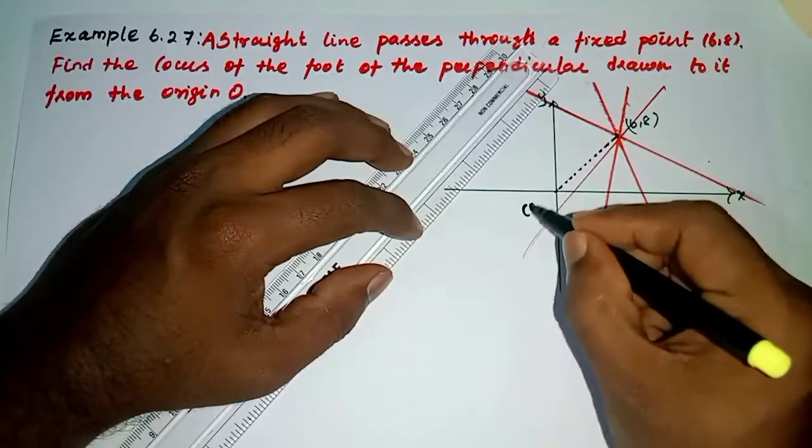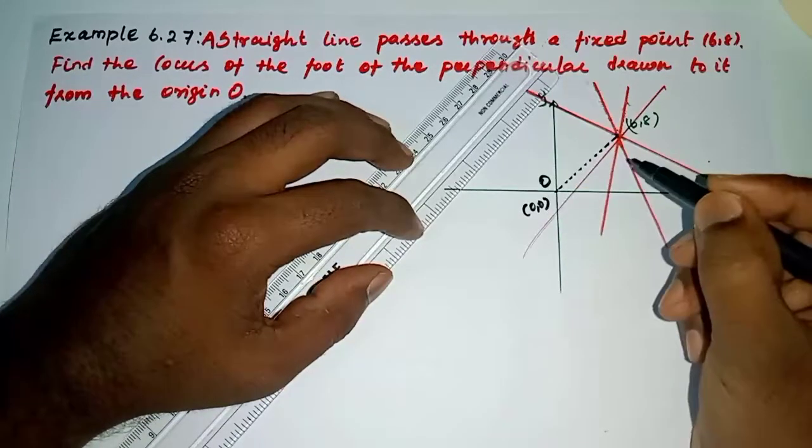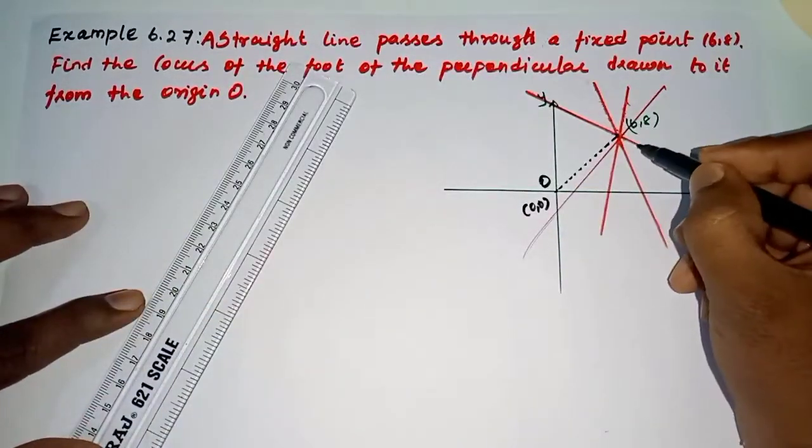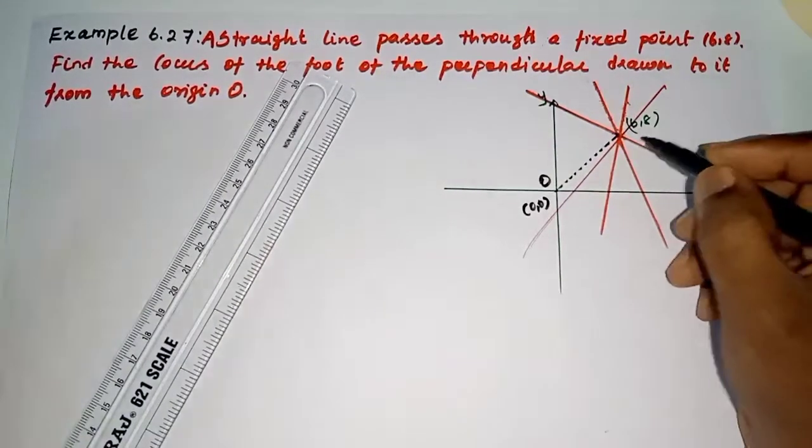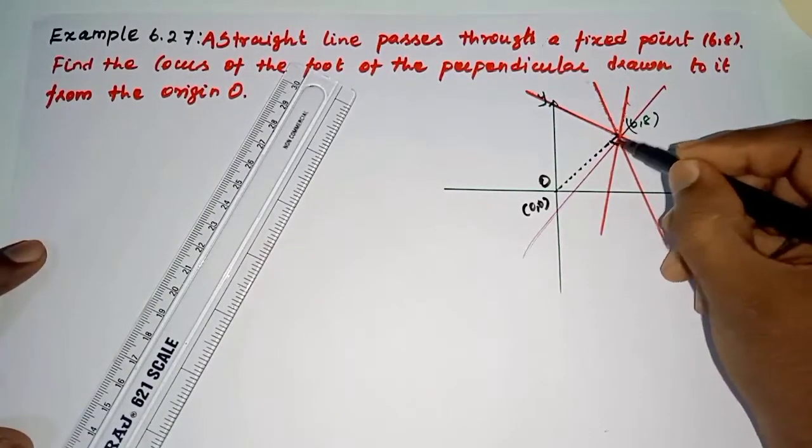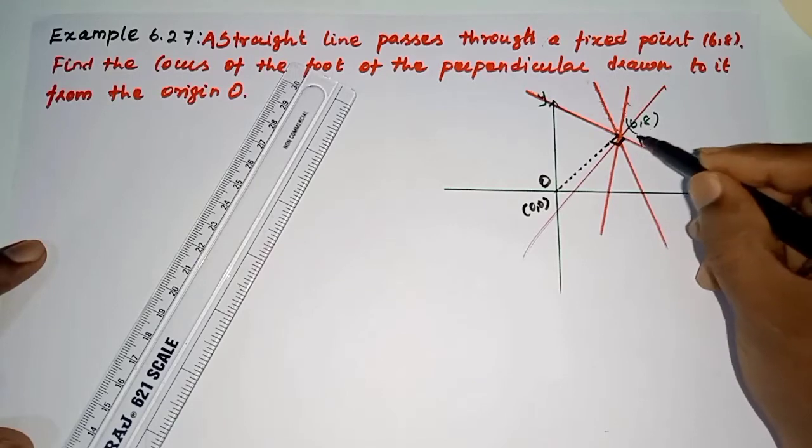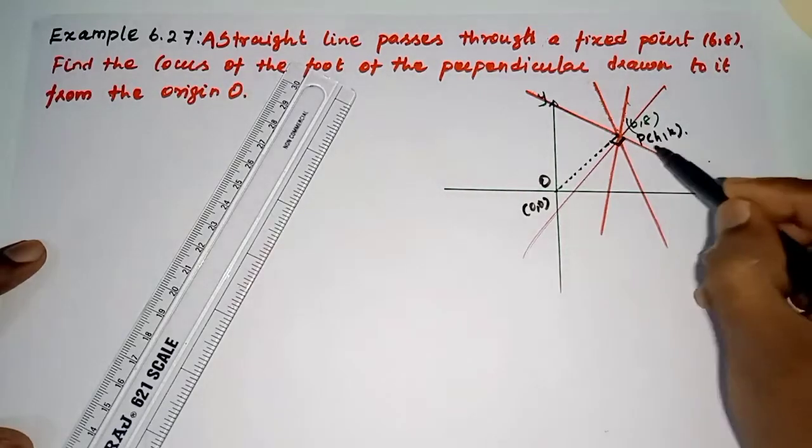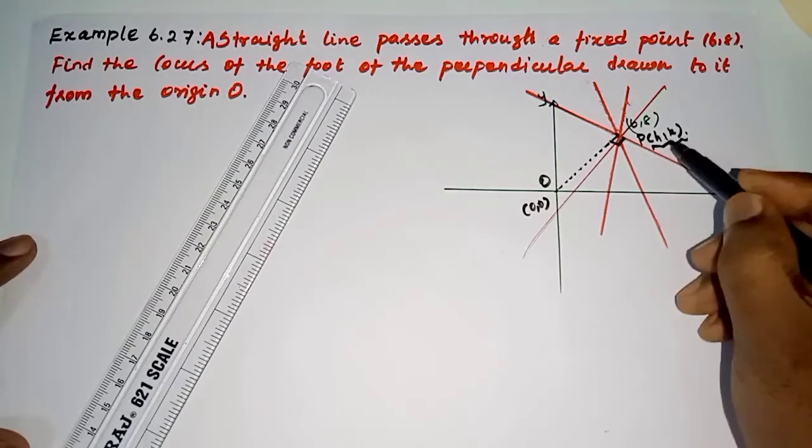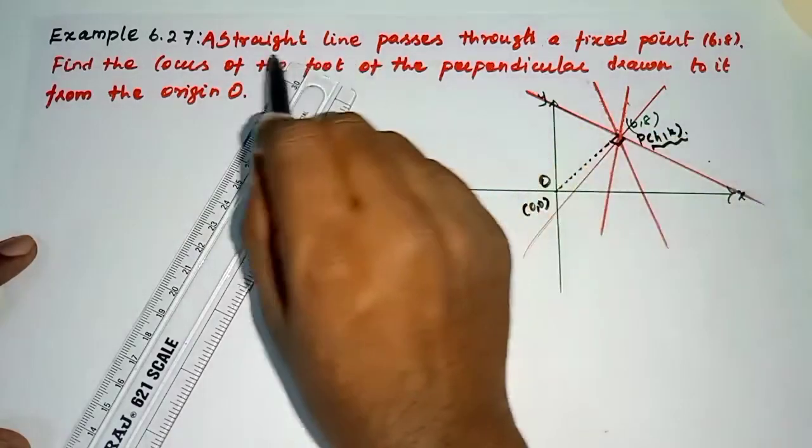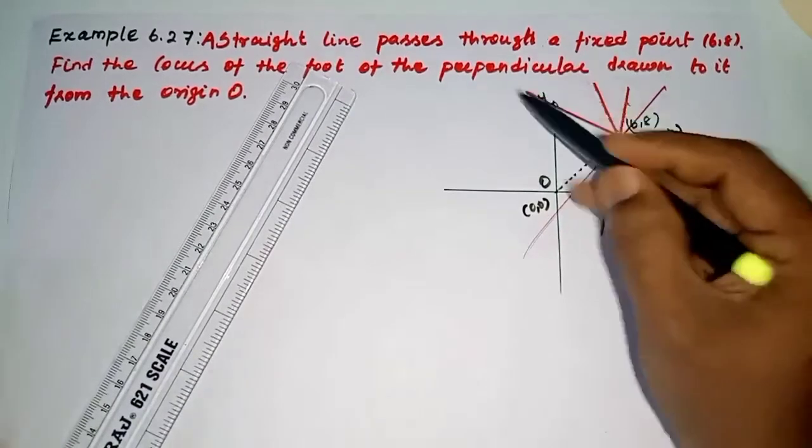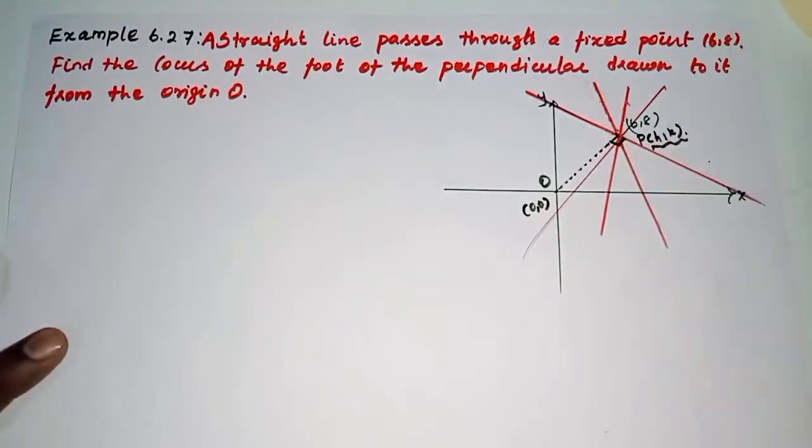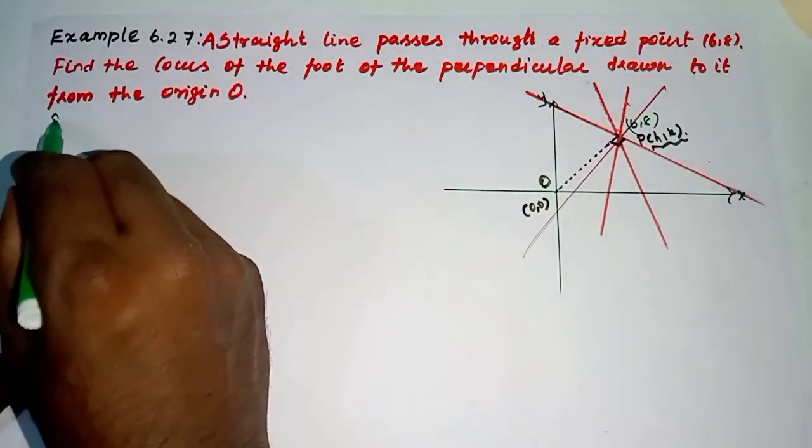So from the origin O to the moving point - in this case, I choose the fixed point for the locus. Let P(h,k) denote the moving point, because this point changes. See, solution.